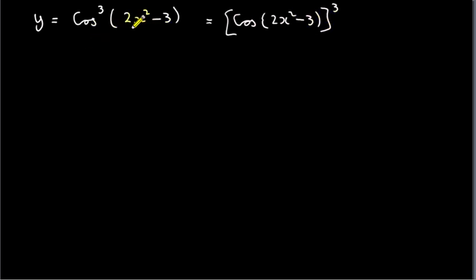What we do is we let u equal 2x squared minus 3, and we let v equal cos of u. That means that we can write y as v cubed.